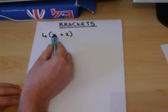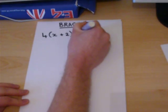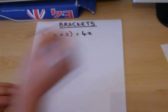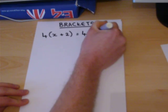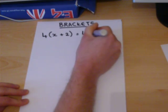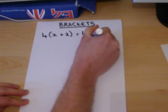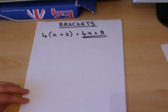So we have 4 times by an x, which gives us 4x, and a 4 times a 2, which gives us an 8. That bracket has therefore been expanded.